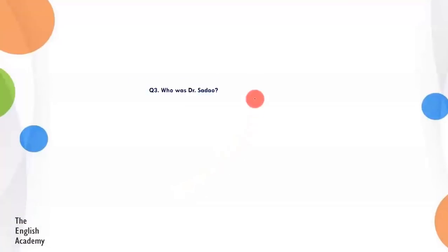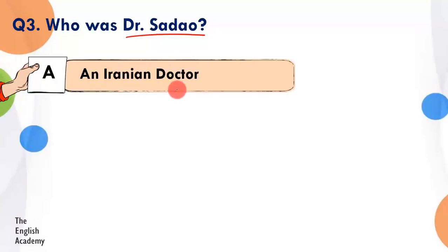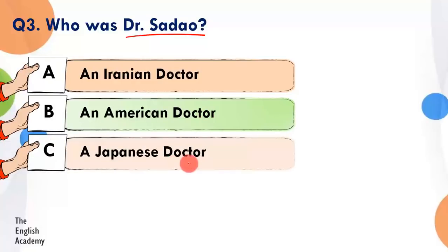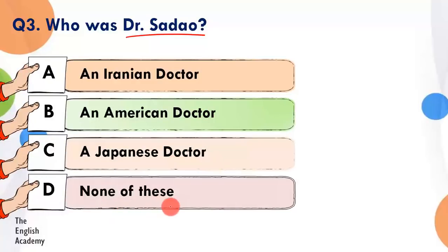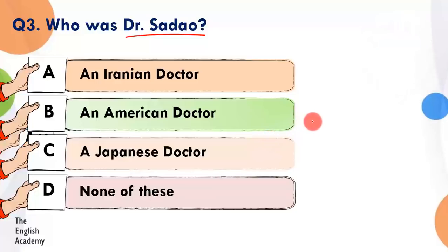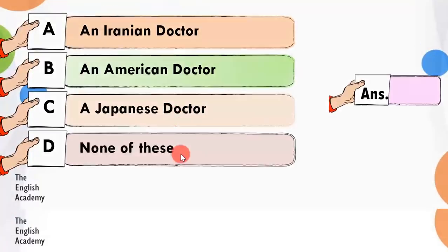Question number 3: Who was Dr. Sadao? Option A: an Iranian doctor. Option B: an American doctor. Option C: a Japanese doctor. Option D: none of these. The time starts now. This is a very easy question, most students will get it right. The answer is Option C — he was a Japanese doctor, he belonged to Japan. Question number 4.